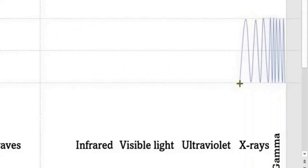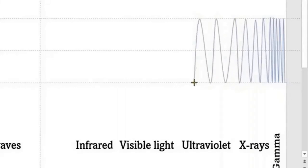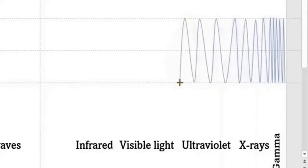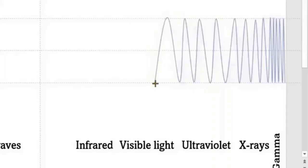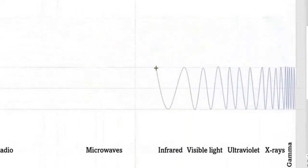After finishing the gamma rays, leave some more space between the previous crest to show the increasing wavelength as we travel across the electromagnetic spectrum — from the shorter wavelengths including gamma rays and X-rays, to the longer wavelengths including microwaves and radio waves. Similarly, do this for the entire wave.